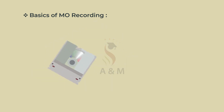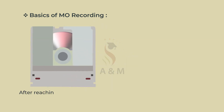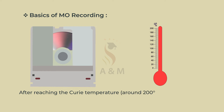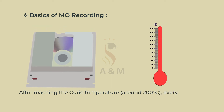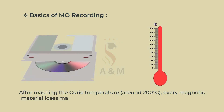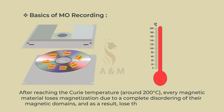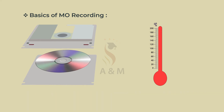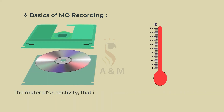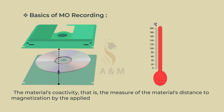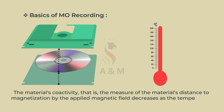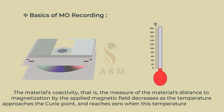Basics of MO recording: After reaching the Curie temperature around 200 degrees Celsius, every magnetic material loses magnetization due to a complete disordering of their magnetic domains and, as a result, loses the data stored on them. The material's coercivity — the measure of the material's resistance to magnetization by the applied magnetic field — decreases as the temperature approaches the Curie point and reaches zero when this temperature is exceeded.